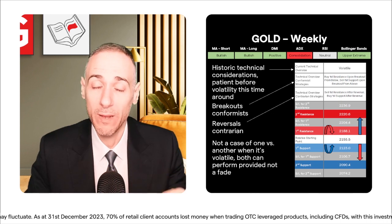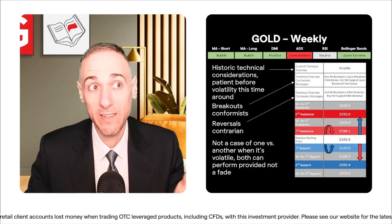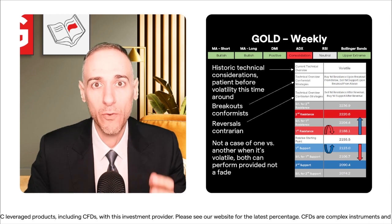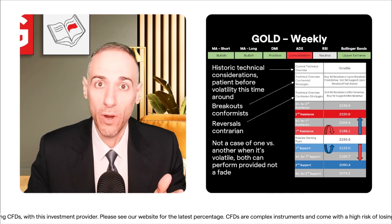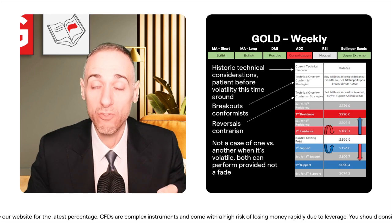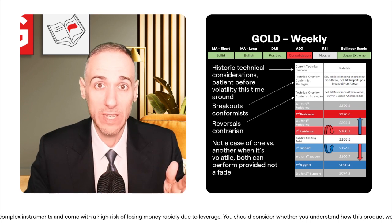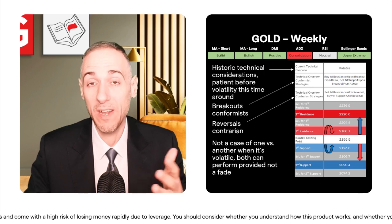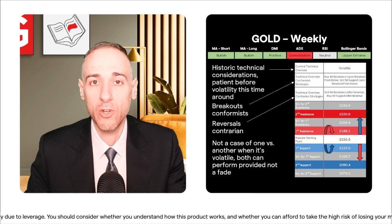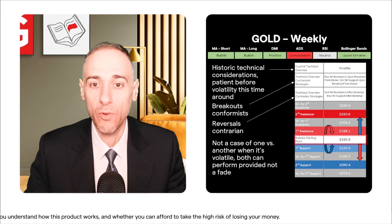Under a volatile overview, both breakout and reversal strategies can outperform, provided it's not a fade strategy — fades get stopped out. In a range-bound market, fades usually do best as they get triggered more often. But under a volatile overview, fades do worst. That's why under volatile overview you won't find a fade strategy in either the conformist or contrarian camp. If you think things will be calm or range-bound, you could entertain a fade, but not under a volatile overview.